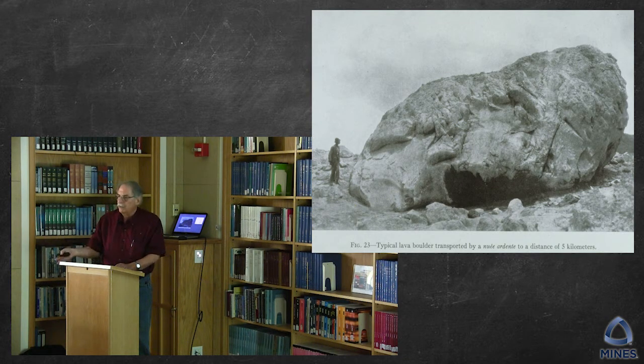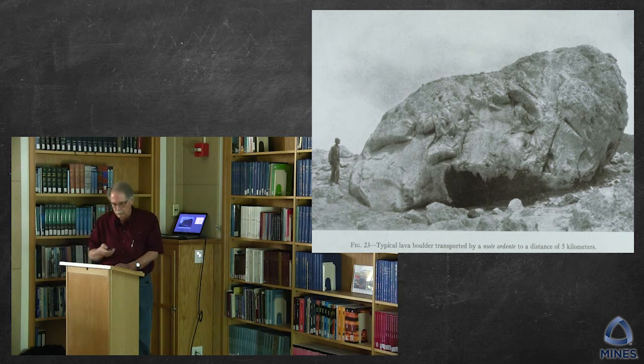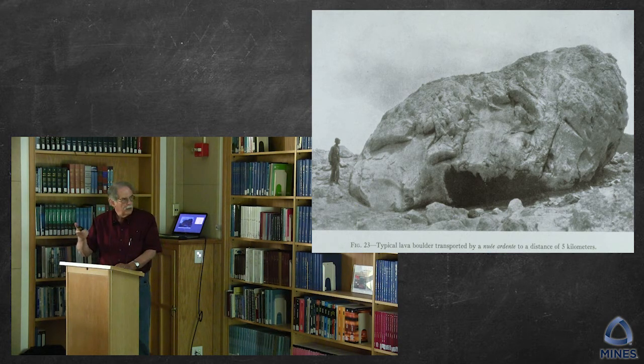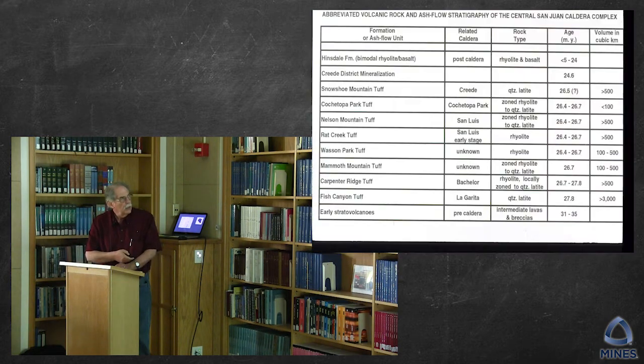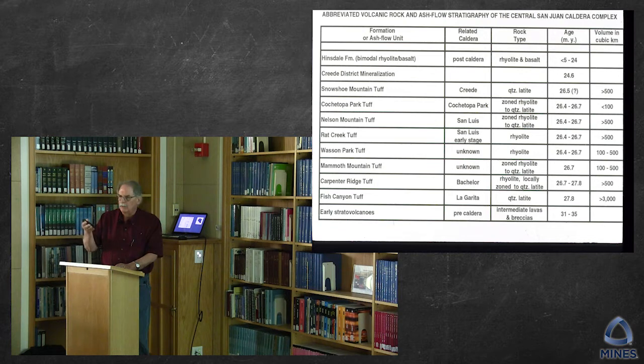And not only do they move with the speed of a freight train, they move with the force of a freight train. And this is a picture that Perret took of a typical, not just a single, but a typical lava boulder that was transported by the nuee ardente for five kilometers. And the San Juans are a complex of these kinds of calderas, each and every one keyed to this kind of eruption in the central area.